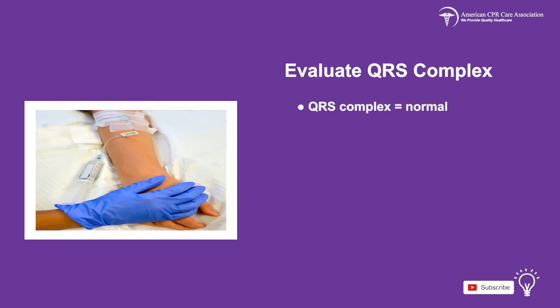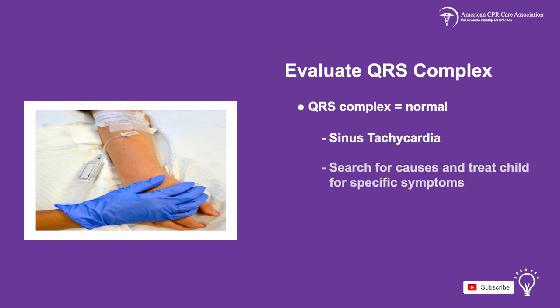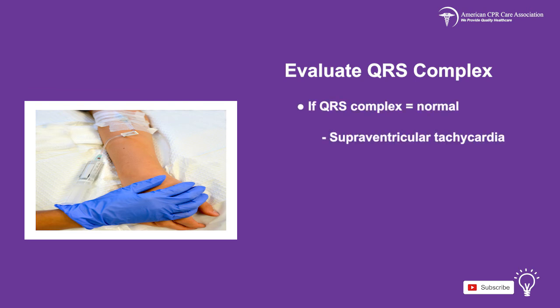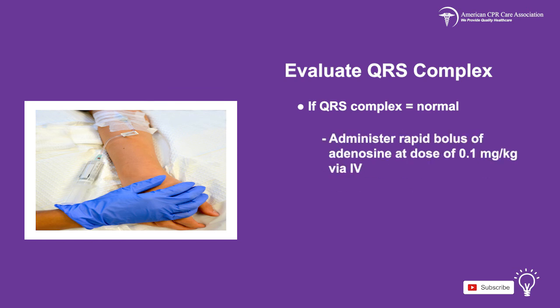If the QRS complex is revealed as normal, then the child may be experiencing sinus tachycardia, in which case you should search for the causes and treat the child for specific symptoms they are exhibiting. A normal QRS complex may also indicate supraventricular tachycardia. In this case, you should consider vagal maneuvers, obtain vascular access, and administer a rapid bolus of adenosine at a dose of 0.1 mg per kg via IV. A second dose of 0.2 mg per kg can also be given.